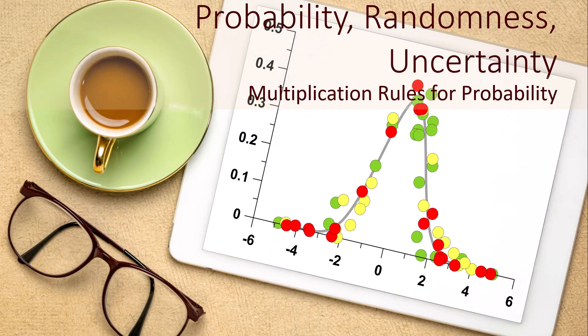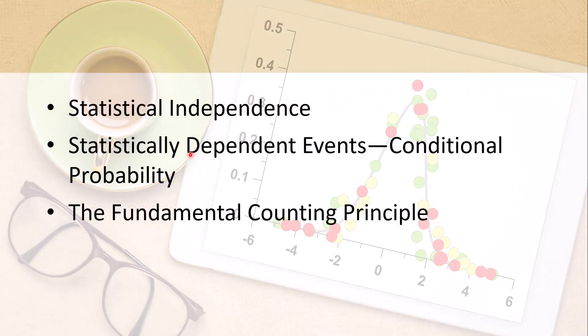Hi everybody. The purpose of this video is to start section 3 of chapter 4, where we are going to talk about the multiplication rules of probability. In this video we will be talking about statistical independence and the idea of a multi-stage experiment. In our next video we will talk about statistically dependent events and conditional probability, and I may also include the fundamental counting principle in a third video.